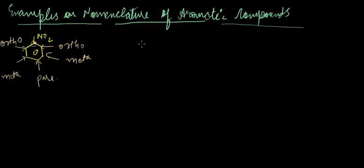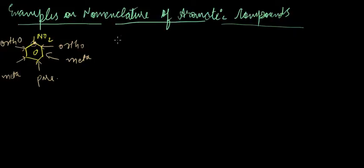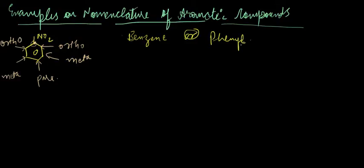Now let us start with some examples. There is a small note that will help us in writing the IUPAC names of structures. There are two things we can call this ring: benzene or phenyl. Benzene is used only when a simple alkane chain is attached or substituted to one of the carbon atoms of benzene.